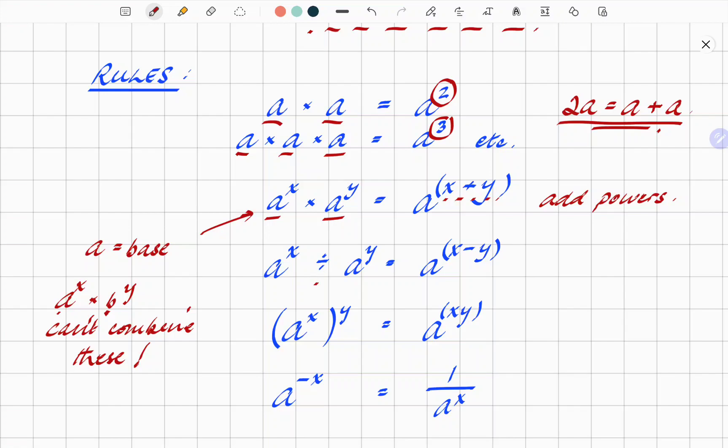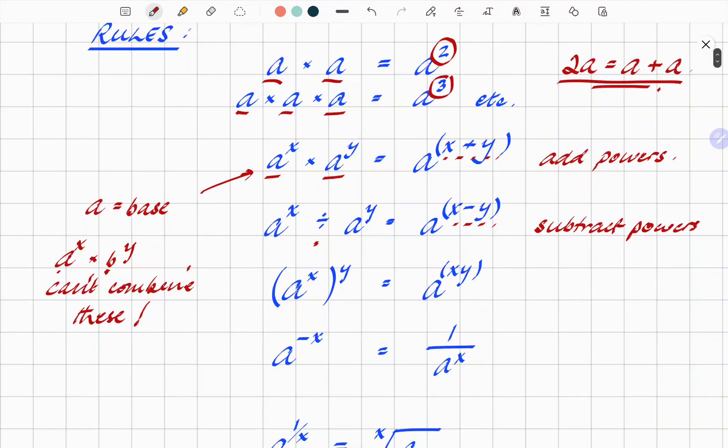A to the X divided by A to the Y. In this one, you subtract. Subtract the powers. So the result of this is A to the power X minus Y. Next one. If you have A to the X, and the whole thing, so brackets around it, the whole thing is taken to the power Y, then the result is A to the power X times Y. So multiply powers.